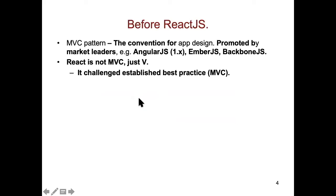Back around 2012, single-page app frameworks were appearing on a near half-yearly basis. All the single-page app frameworks that existed at the time — Angular, Ember, Backbone — followed the MVC pattern, meaning you structured code into model, view, and controller parts. That was best practice at the time, even though MVC began as a pattern for server-side code. But the React design team decided they weren't going to follow MVC at all — they were only going to focus on the V part of MVC. That was the first key difference between React and the rest.